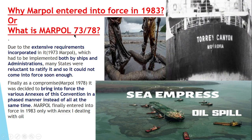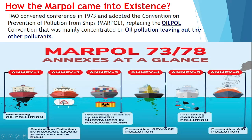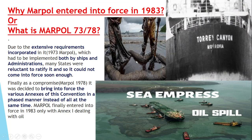We know that MARPOL came in '73/'78 because of the Torrey Canyon incident. What happened in the Torrey Canyon incident? The Torrey Canyon ship got grounded on the coast of Spain and caused oil pollution because of bad weather and a failure of the steering system. Because of the steering failure they were unable to correct course and the ship ultimately grounded, and oil pollution occurred along the coastline of Spain and Portugal. This incident triggered the response of the IMO, and they felt there should be strong regulation to prevent this type of incident.